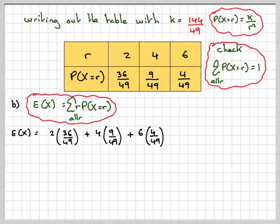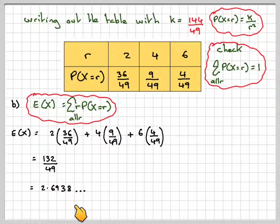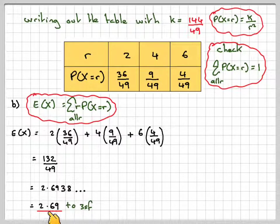Now you might want to work out 2 times 36, 4 times 9, 6 times 4, and then to divide the result by 49, and we get 2.6938, which to three significant figures is 2.69. The mean should be somewhere between 2 and 6.